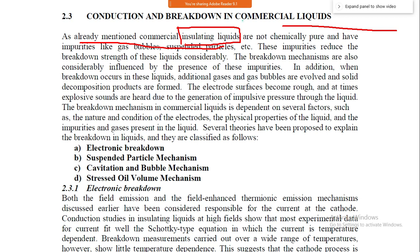Commercial liquids are not chemically pure. They contain some organic matter, complex material mixtures, and contaminants such as gas bubbles, large gas bubbles, and suspended particles. These impurities cause the breakdown strength to decrease.